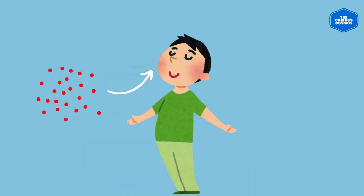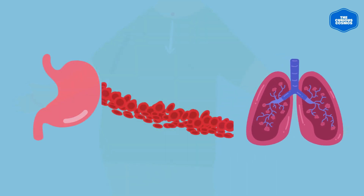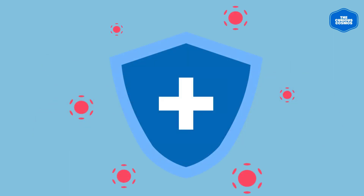These microorganisms can enter the body through inhalation of airborne droplets containing the infectious agents, aspiration of contaminated fluids or particles into the lungs, or through the bloodstream from other parts of the body where the infection has already established.